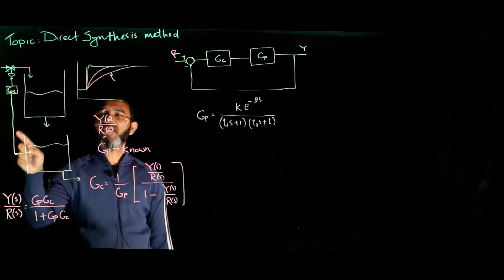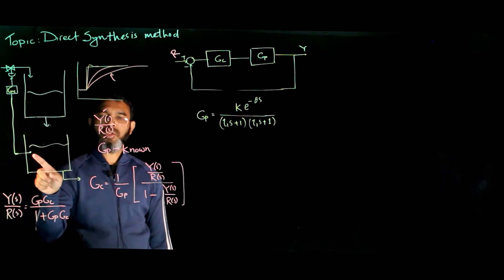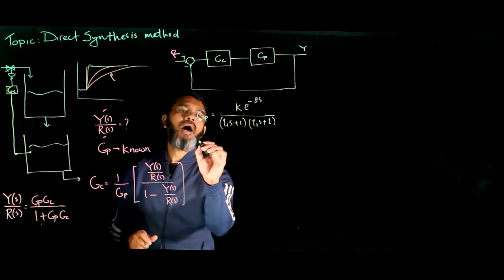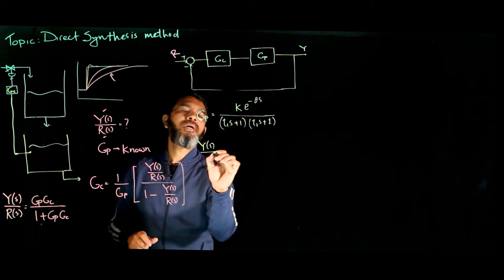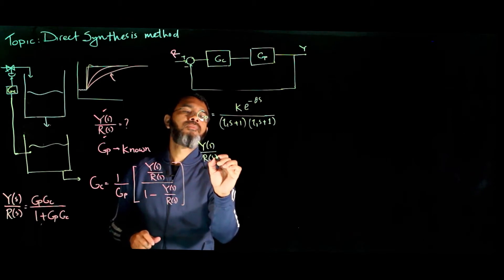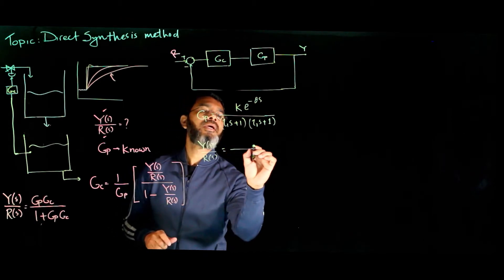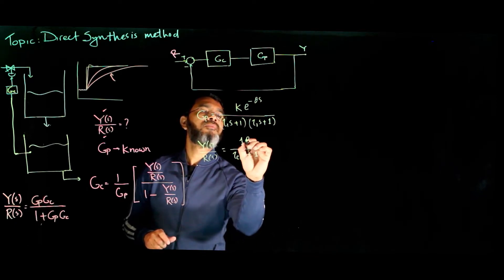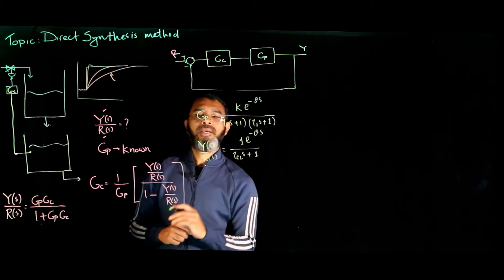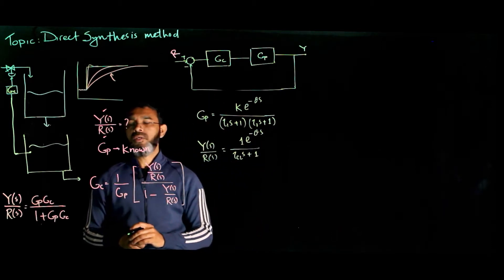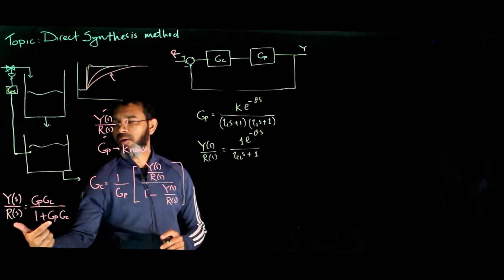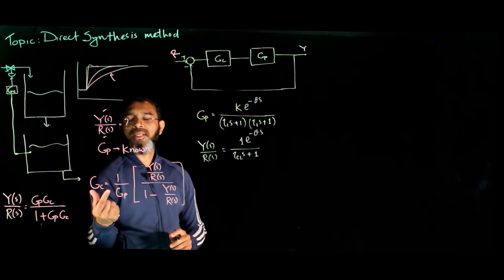Now if we have this control system and we want the output to respond in a first order fashion, the same delay will be there. So for these two equations, the expression for the closed-loop response and the expression for the controller that we got by simply rearranging this equation.